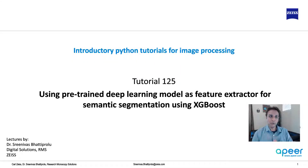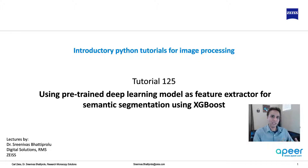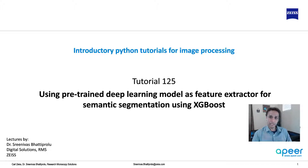Welcome to introductory Python tutorials for image processing. We are in the middle of discussing transfer learning, and for the last few videos we have been talking about semantic segmentation using U-Net deep learning. A few dozen videos ago we talked about semantic segmentation using traditional machine learning with random forest, gradient boosting, and XGBoost. Let's do something fun and actually mix deep learning and traditional machine learning to see if we can benefit from both.